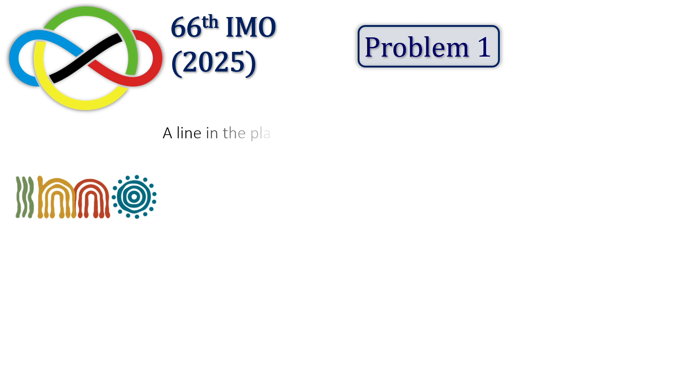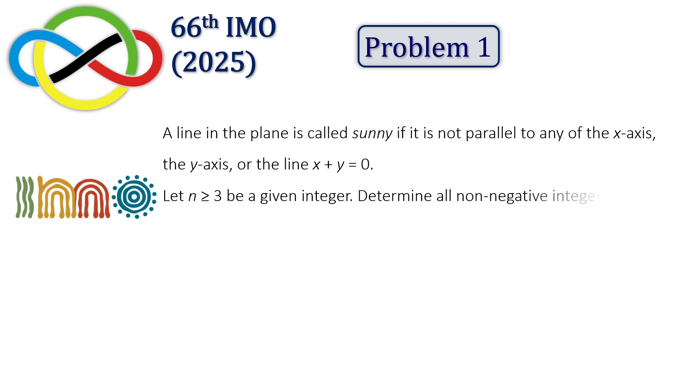The problem states a line in the plane is called sunny if it is not parallel to any of the x-axis, the y-axis, or the line x plus y equals 0. Let n greater than or equal to 3 be a given integer. Determine all non-negative integers k such that there exist n distinct lines in the plane satisfying both of the following.